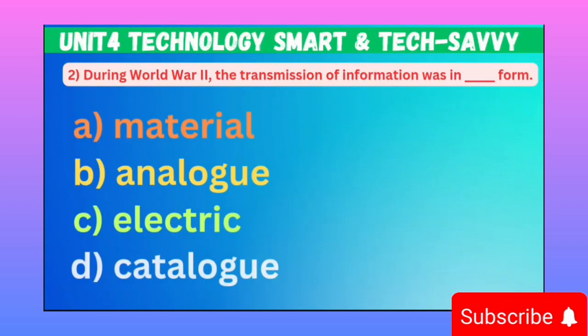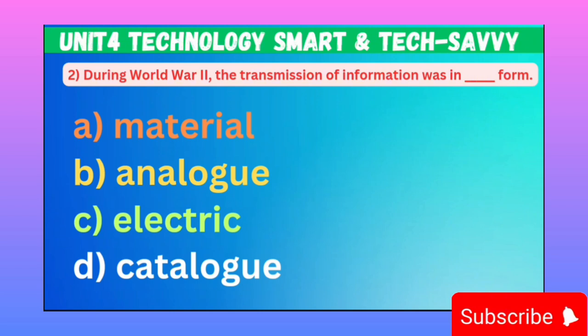MCQ number two: During World War II, the transmission of information was in dash-dash form. Option A: Material. B: Analog. C: Electric. D: Catalog. Correct option is B, Analog.